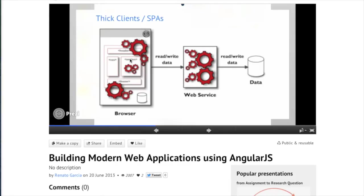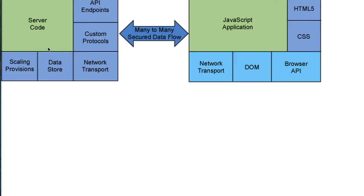The server communicates with the client using JSON, XML, or other data structures. Presentation logic is on the client; server logic is on the server. I'll show you an app that follows that pattern — it has presentation logic on the client and gets data from a service, but doesn't have a back end yet. You can use any technology you like: PHP, Java, Node.js for the server.